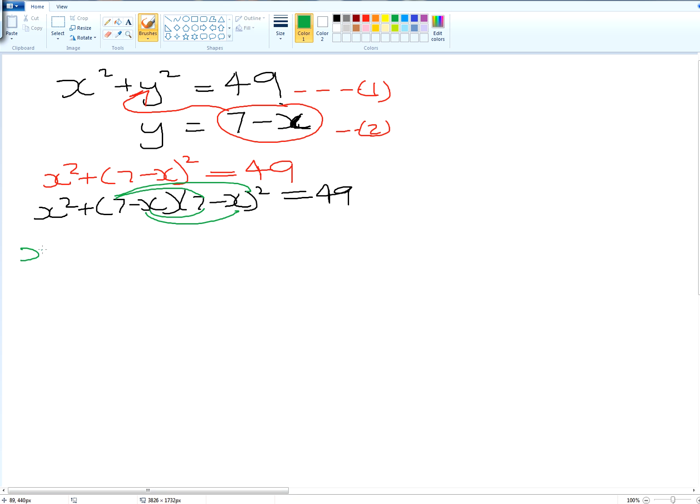Okay, so we have now x squared, which is here, plus 7 times by 7 is 49. 7 times by minus x is? Minus x times by 7 is? Minus x. Okay, minus x times by minus x is? Is equal to? 49.